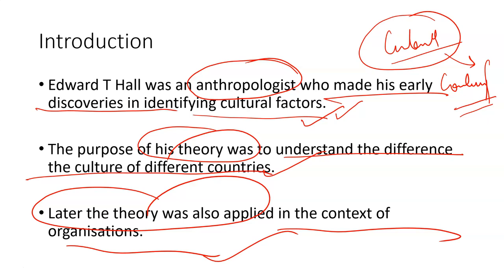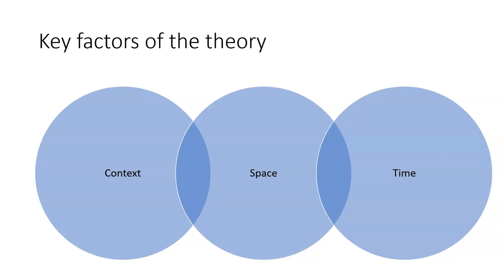So what were their factors? There were three factors. The first is called context, the second is called space, and the third is called time. They said that cultural differences between different countries have three reasons: either there is a difference in their context, or a difference in their space, or a difference in their time. Now let us understand these three factors in detail.